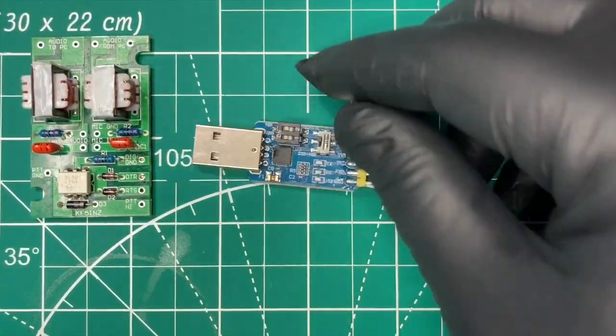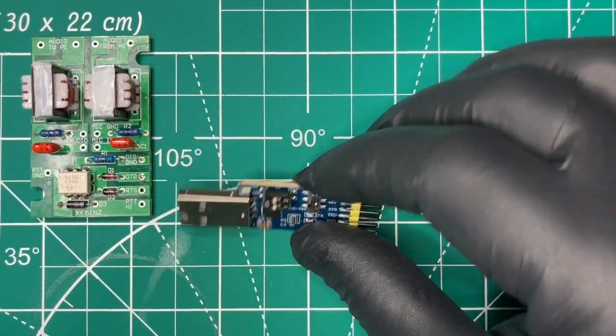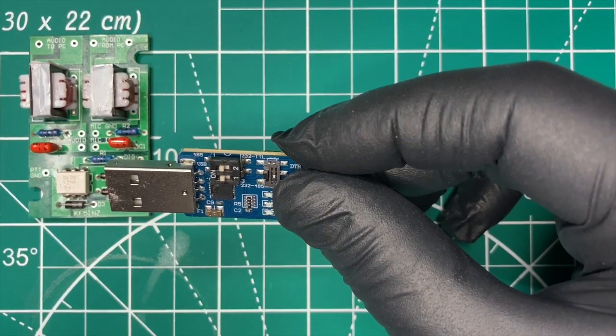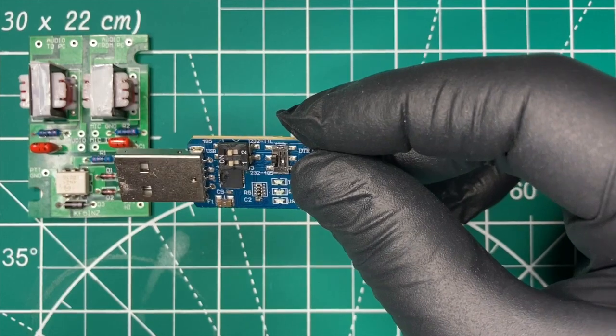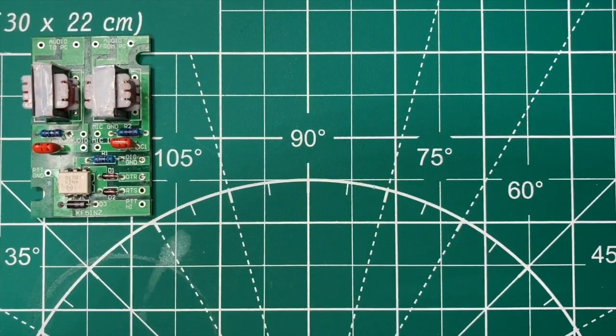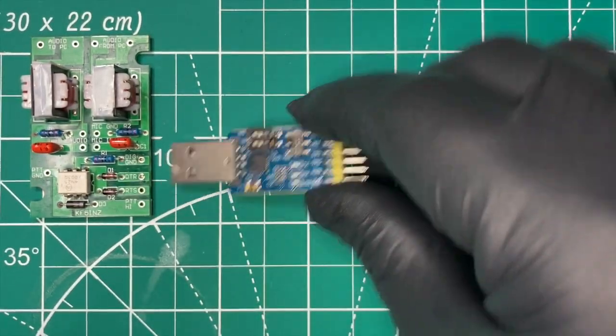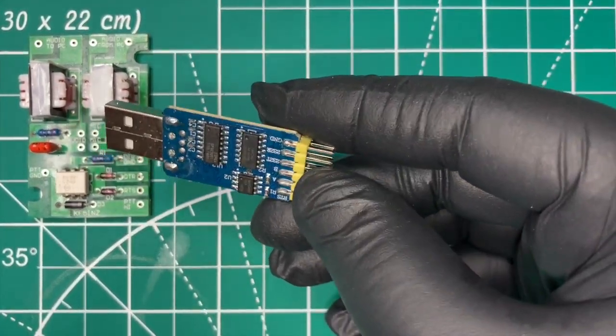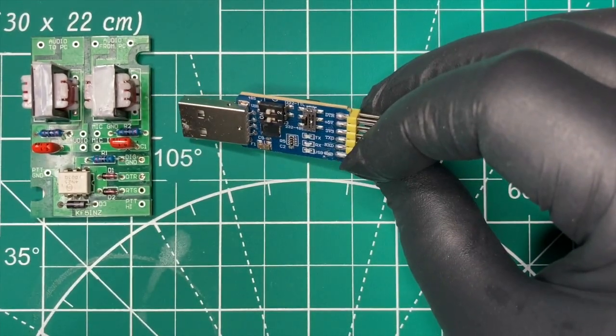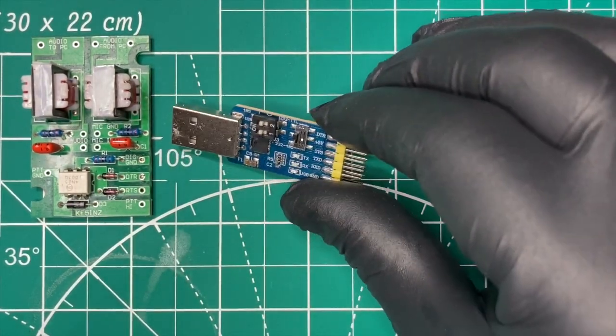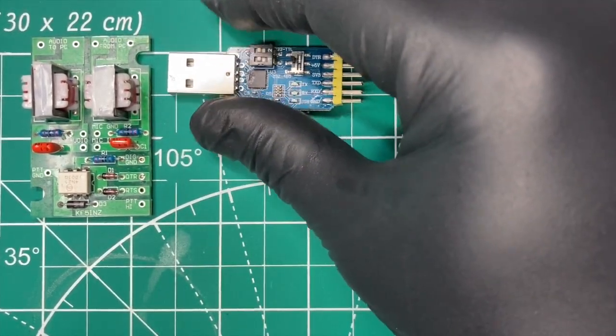We're also going to be using this guy. Now, this is a TTL or a 232 and a 482, 485 I mean, USB adapter. And it has ground, RTS, DTR, 5 volts, 3 volts, and so on. So, we're going to be using that.